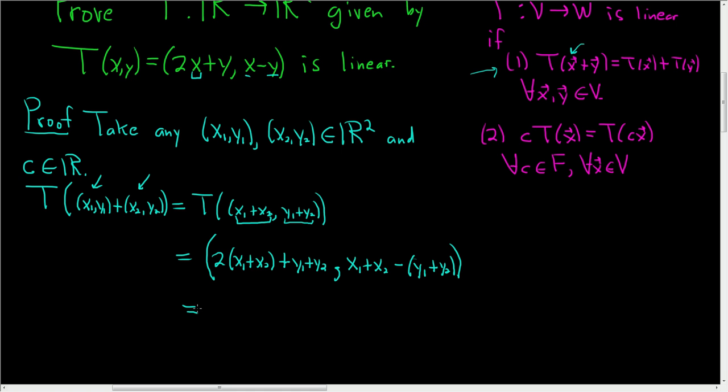And now let's go ahead and distribute and see if we can make sense of this. So this is, let's see, 2x1 plus 2x2 plus y1 plus y2, comma. And then we have x1 plus x2, and then we'll distribute the minus. So minus y1 minus y2.